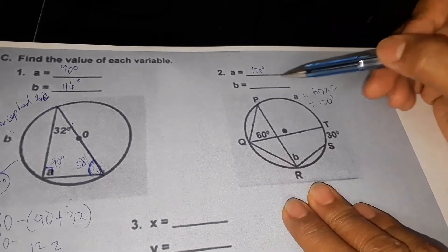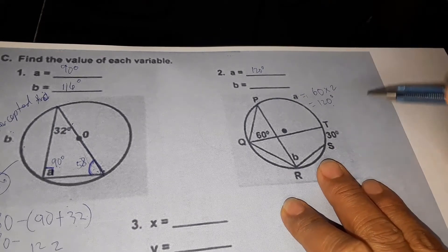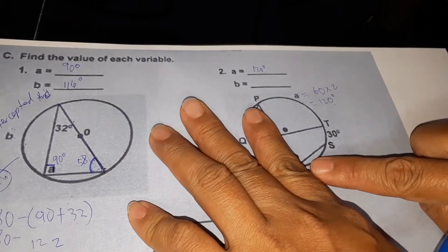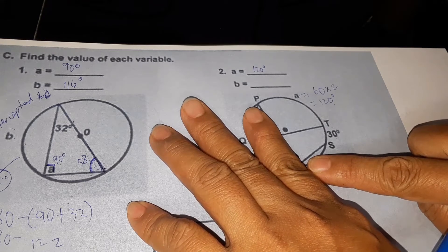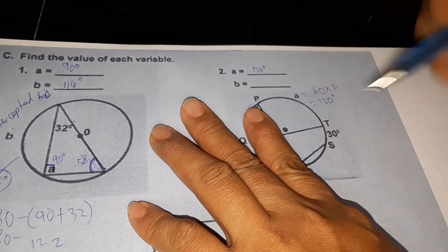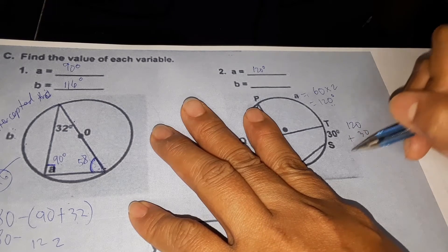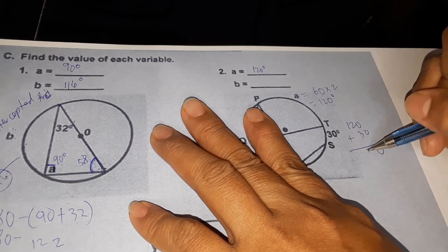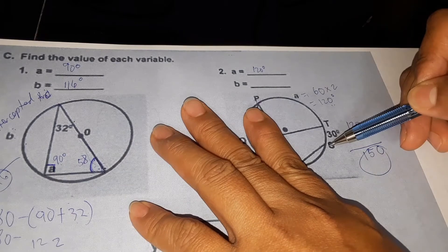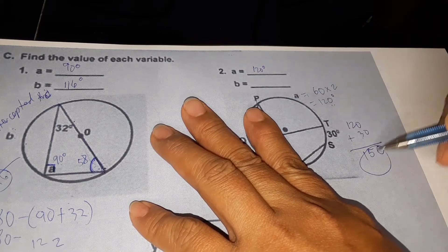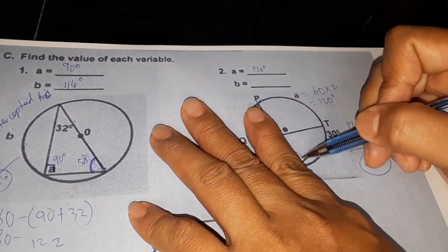If A is 120 degrees and TS is 30 degrees, then our B is also an inscribed angle and its intercepted arc is PTS. So PT is 120 plus 30. 120 plus 30 is 150. So arc PTS is 150.